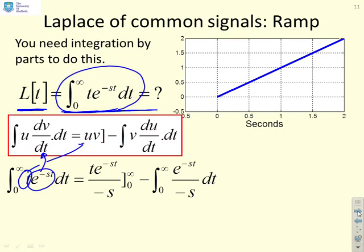So if I do that, you'll see the bits that I just calculated the limits, the uv, is t e to the minus st over minus s, evaluated at 0 and infinity, and you'll notice that just gives you 0. And then, if I calculate this v du dt, I end up with this particular integral here.